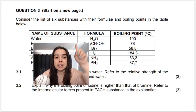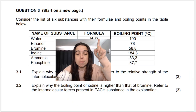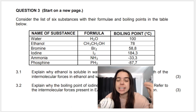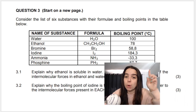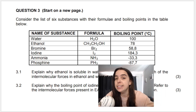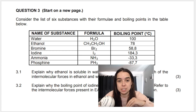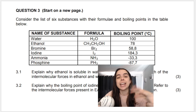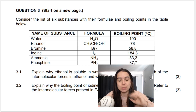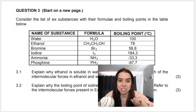In this question they're giving me the names of six different substances, their molecular or chemical formulae, and their boiling points. It is important to note that the boiling point of a substance is linked to the type of intermolecular forces that exist between the molecules. The stronger the intermolecular forces, the higher the boiling point, because more energy is needed to overcome them.